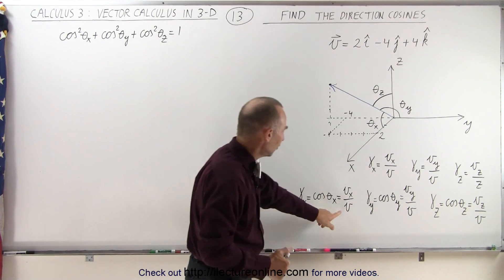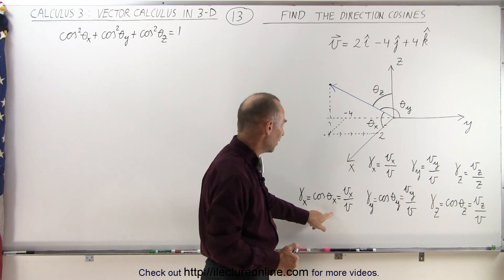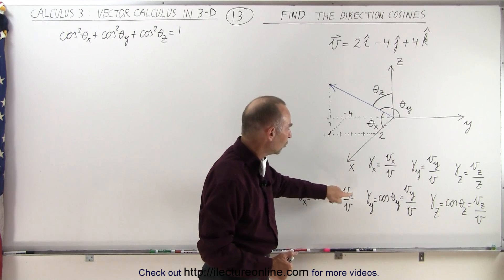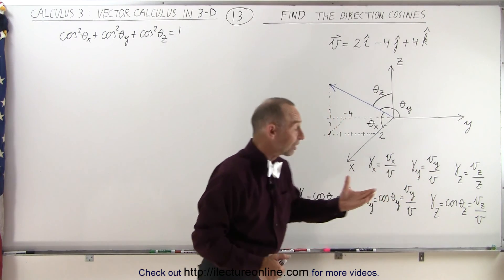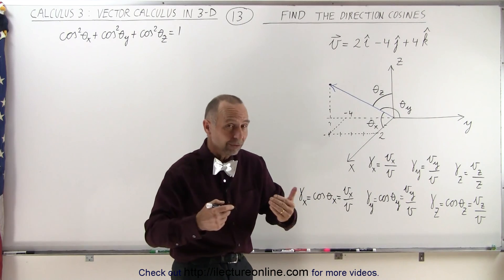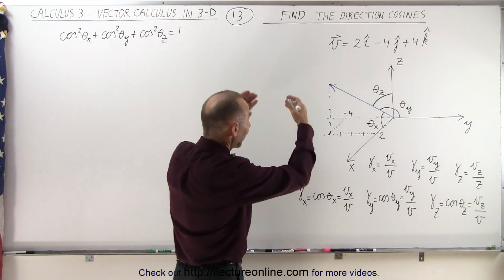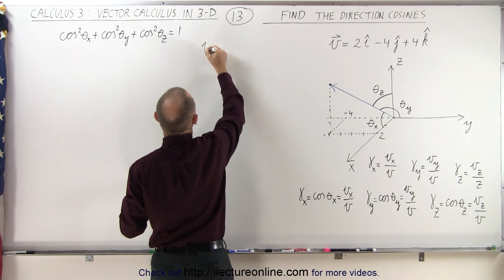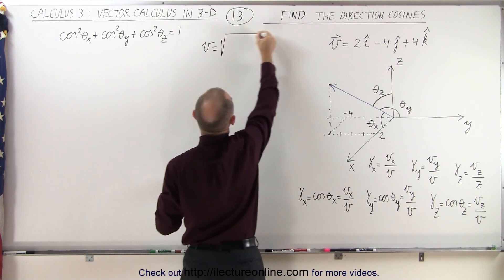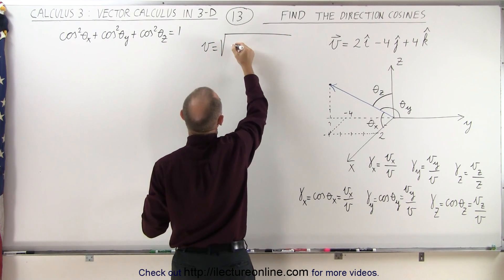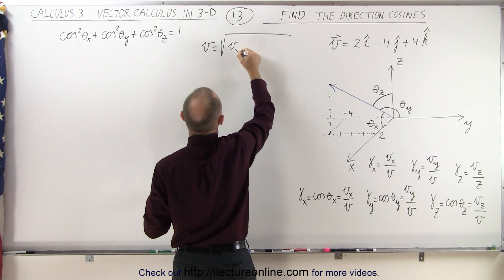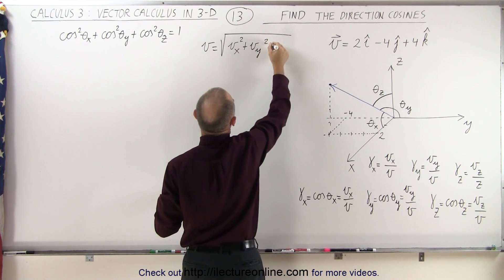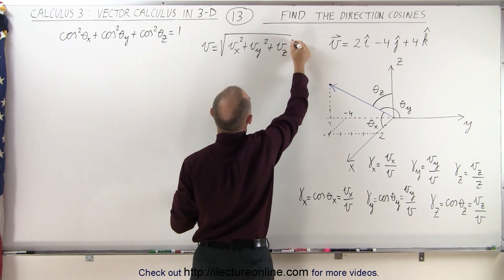First, since we need to find the direction cosines by taking the magnitude of the x, y, and z components of the vector divided by the magnitude of the vector, we have to find the magnitude of that vector. The magnitude of vector v is equal to the square root of the sum of the squares of the components — v sub x squared plus v sub y squared plus v sub z squared.